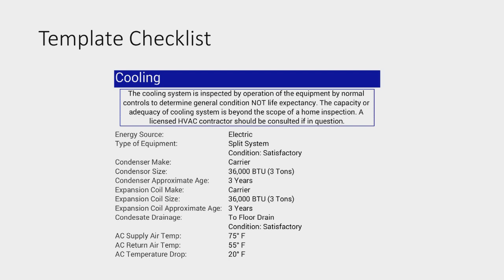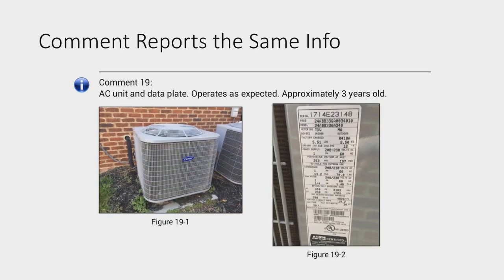Here is the cooling section in our detailed home inspection template, and it's a checklist. You go down and check energy source, type of system, condition, make, model, serial number, and size. It's got all the information you may want to check and report to your client, but it's hard to read — it's almost a spec sheet. Compare that to a comment: here is a simple comment showing the AC and the data plate, telling the client it operates as expected and it's about three years old.